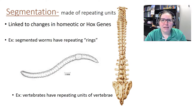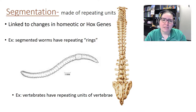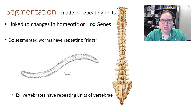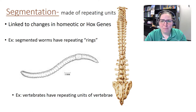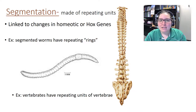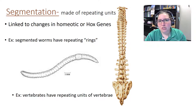Another term is segmentation — when an organism is made up of repeating units. These repeating units are linked to changes in Hox genes. We are segmented: our vertebrae are made of repeating units. A segmented worm or earthworm shows very clear segmentation.